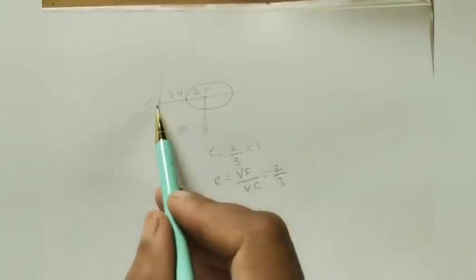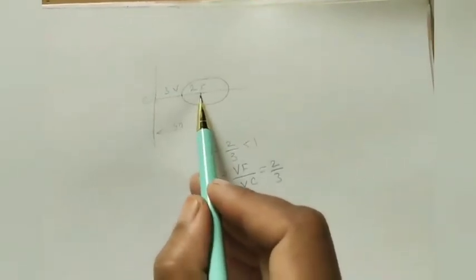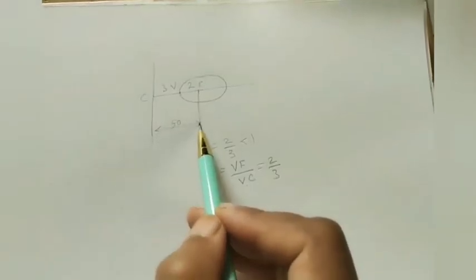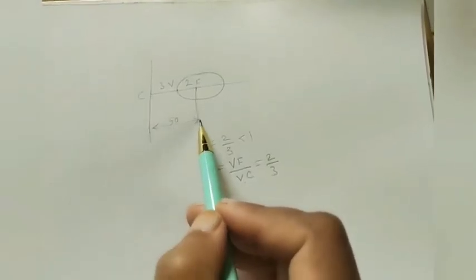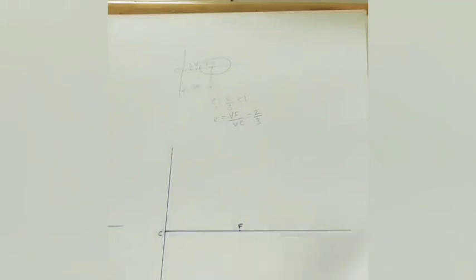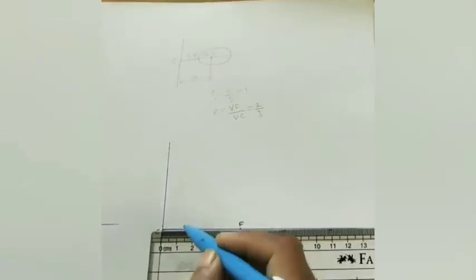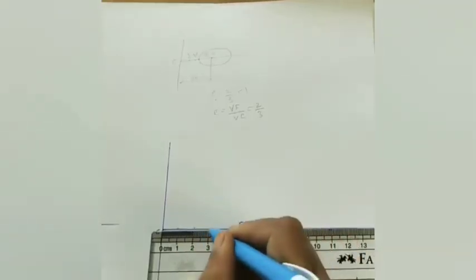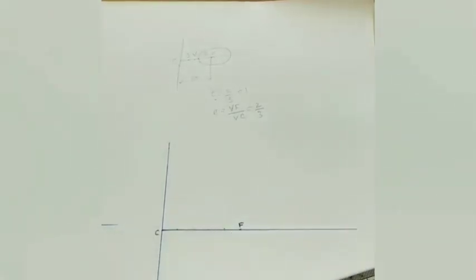So 3 plus 2 — total CF is 5 parts. How much length is it? 5 cm. We have to divide this 5 cm into 5 parts. So each 1 cm is 1 part. I am taking 1, 2, 3, 4, 5 — five parts, each part is 1 cm.